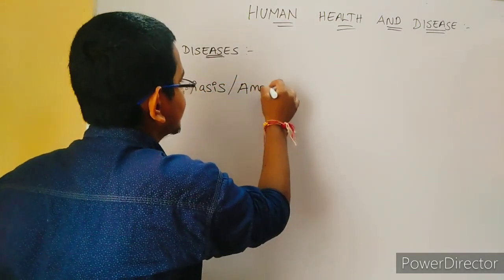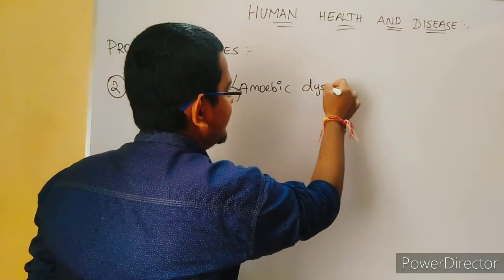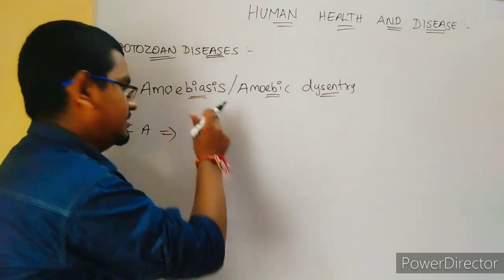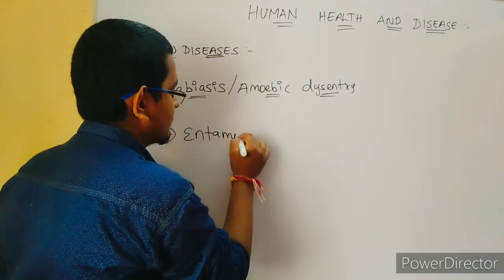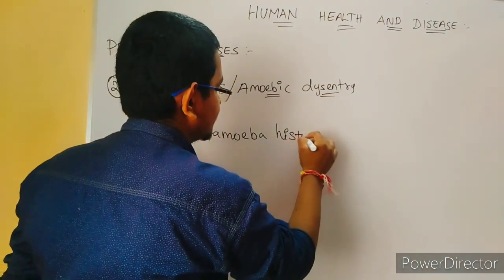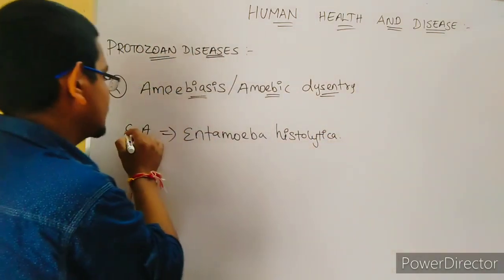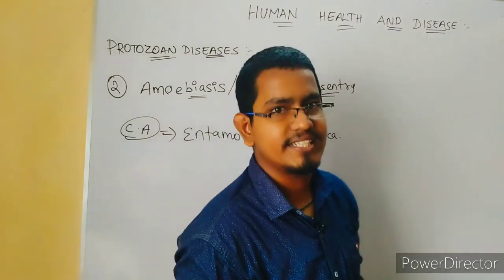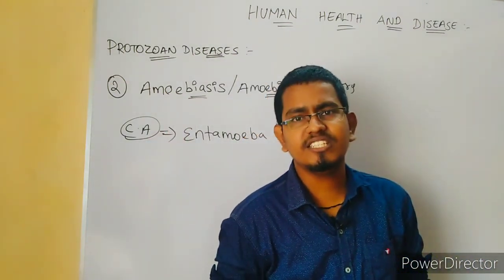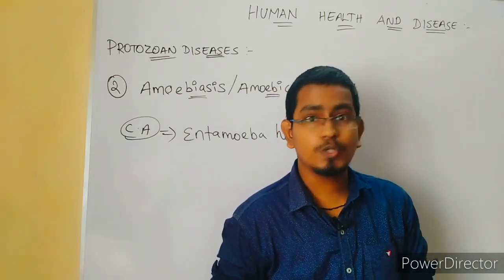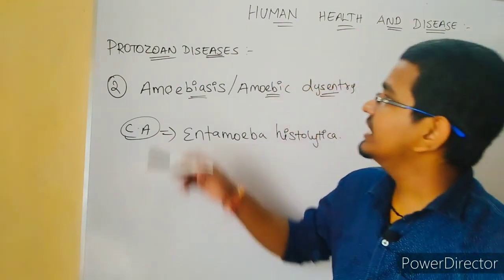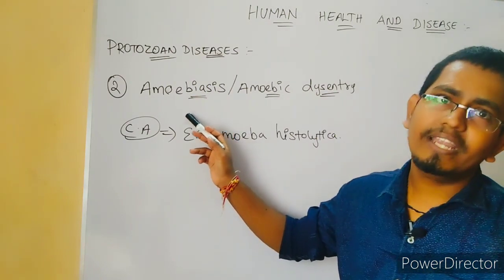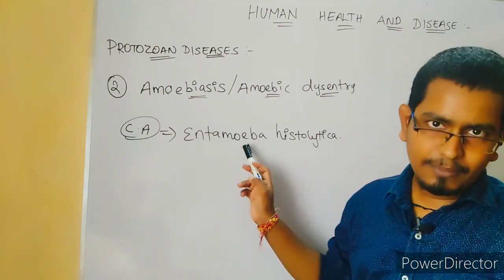Amoebiasis, or amoebic dysentery, is a protozoan disease. The causative agent for amoebiasis is Entamoeba histolytica. The causative agent is the agent which causes a disease, also known as a pathogen. The pathogen may be bacteria, virus, fungus, protozoa, or helminths. Here the causative agent is Entamoeba histolytica, a protozoan.